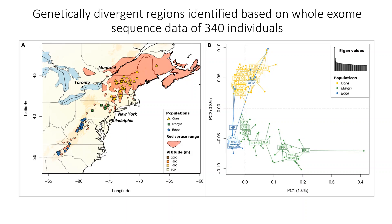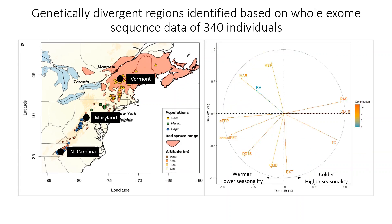On whole exome sequencing of these individuals, it was found that all three regions are genetically distinct and form three distinct geographic genetic regions. The offspring of these individuals are then grown in three common gardens along its range at Vermont, Maryland, and North Carolina. A climate PCA was done on selected environmental variables and the PC1 was able to explain 49% of the variation, with higher PC1 values indicating colder climate and higher seasonality, and lower PC1 scores indicating warmer climate and lower seasonality.